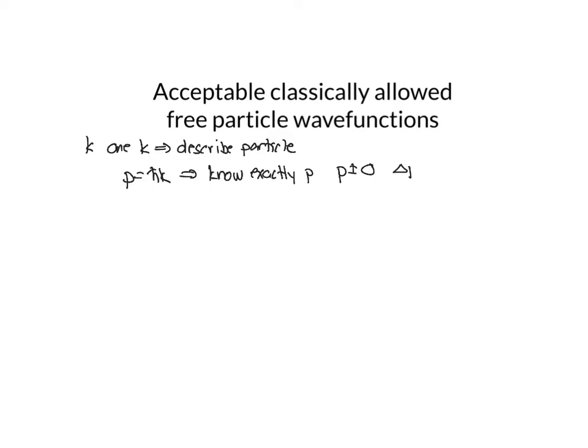And if we know the momentum exactly, so we know p plus or minus nothing, then our uncertainty in the momentum is zero. And if our uncertainty in the momentum is equal to zero, and we know that the uncertainty in momentum times the uncertainty in the position has to be greater than or equal to h bar over two, that means that our uncertainty in our position has to go to infinity. So we have no idea where the particle is if we completely specify what the momentum is.